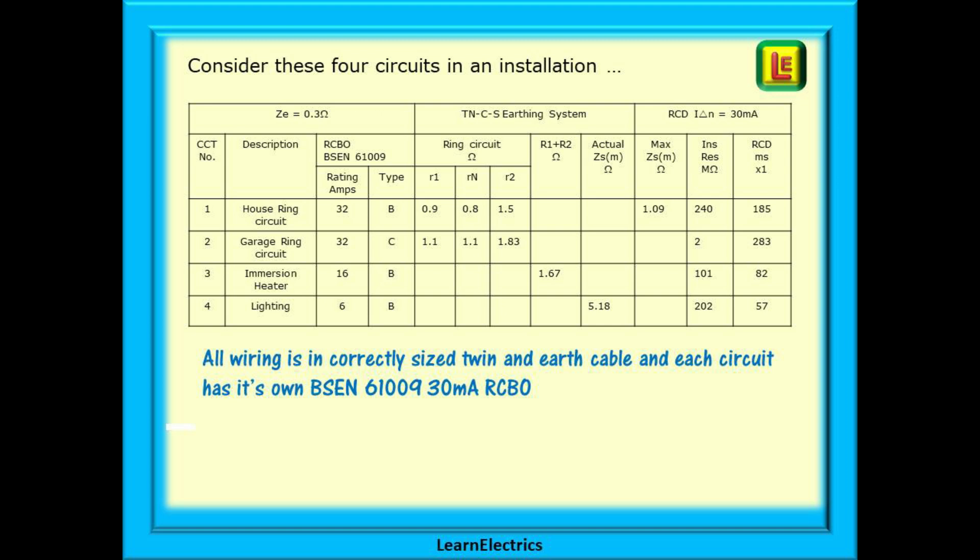You are asked to consider the four circuits shown in this table, part of a schedule of test results. We will assume that the wiring is correctly sized in twin and earth cable and do note that each circuit is protected by its own 30 milliamp RCBO. You will be expected to complete the blank spaces on this chart and answer relevant questions.